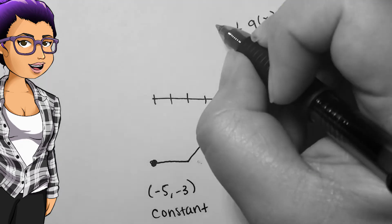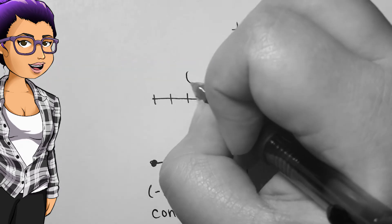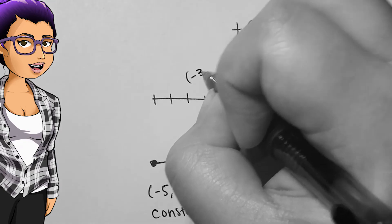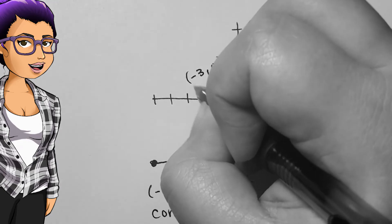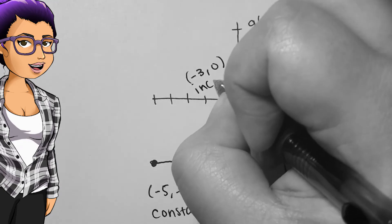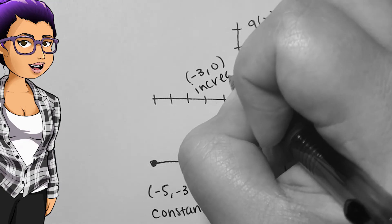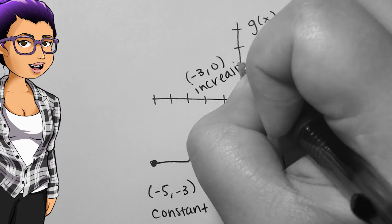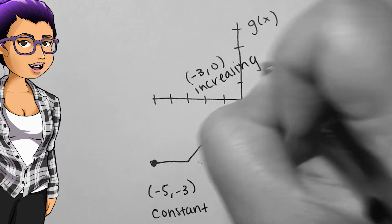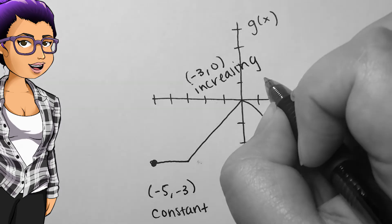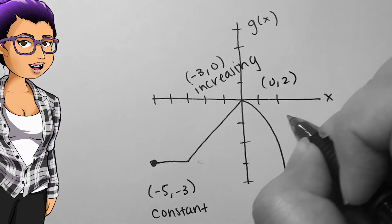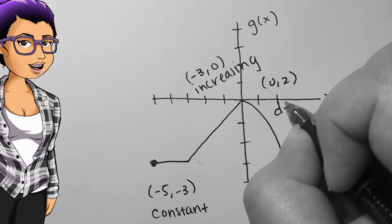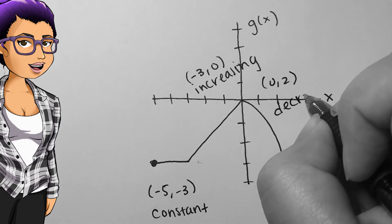Since each output is the same as the one before it from negative 5 to negative 3, this is our interval that is constant. After this, each output is bigger than the last until we get to x equals 0, so negative 3 to 0 is an interval where we are increasing.